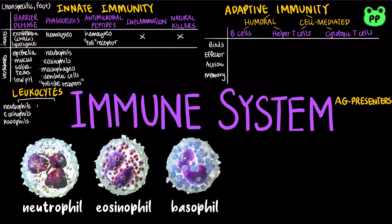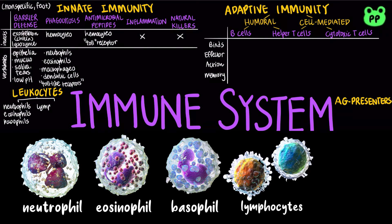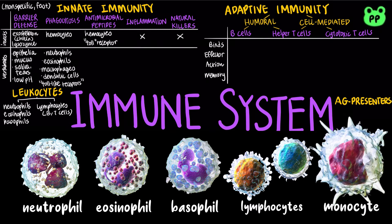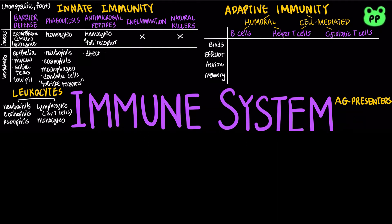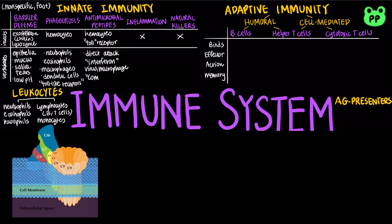Agranular leukocytes include lymphocytes such as T cells and B cells that are involved in adaptive immunity, and monocytes, which are the largest type of leukocyte that will later develop into macrophages. Antimicrobial peptides can attack microbes directly. Interferon proteins provide innate defense against viruses and help activate macrophages. The complement system consists of 30 proteins that cause lysis of invading cells and also participate in inflammation.